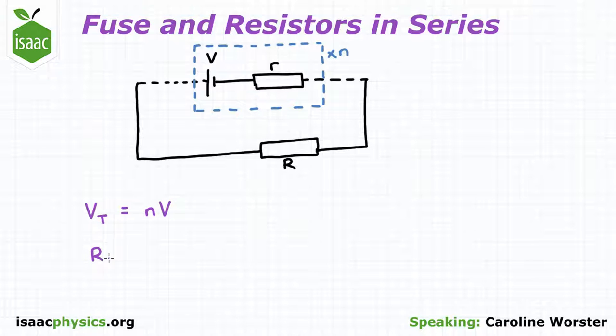The effective resistance in the circuit is equal to the sum of the resistances, so is equal to n little r plus capital R.